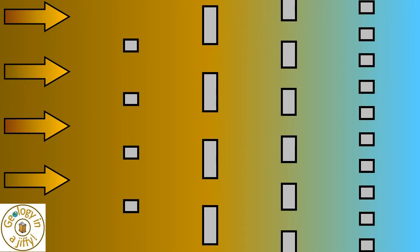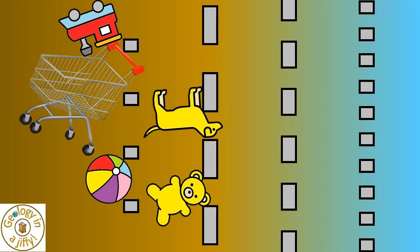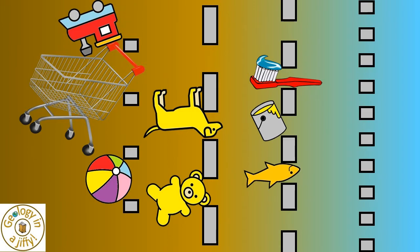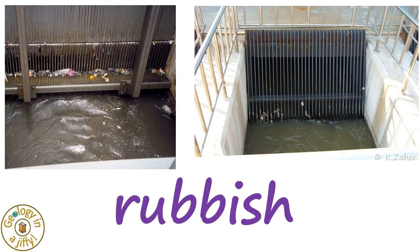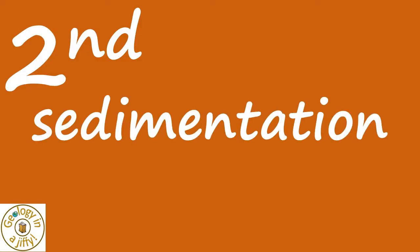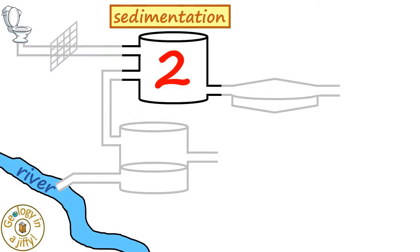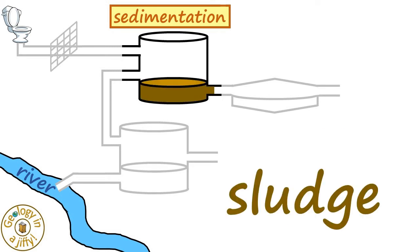Starting with larger sized holes, the holes decreasing in size as the waste water moves through them, so that the sewage gets separated out as it washes through the filters, with rubbish trapped in the filters, as these screens show. The second stage involves sedimentation, from where we end up with two products: sludge and effluent.